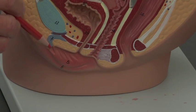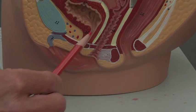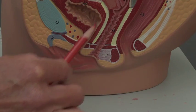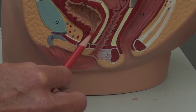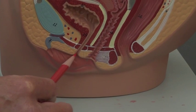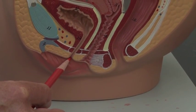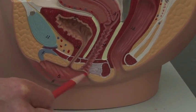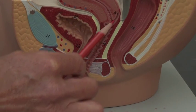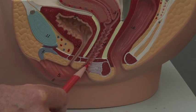The first thing hanging down in that vestibule would be the clitoris. Then you're going to have the opening of the urethra. There's your bladder and then there's the urethra, so that's where urine is going to come out through the urethra.